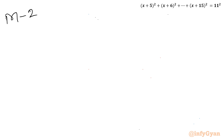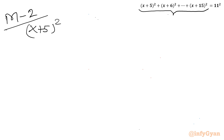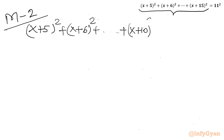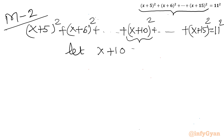Now let us see Method 2, where I will use substitution. There are 11 brackets total, and the middle one is (x+10)². So let us consider x+10 = a.